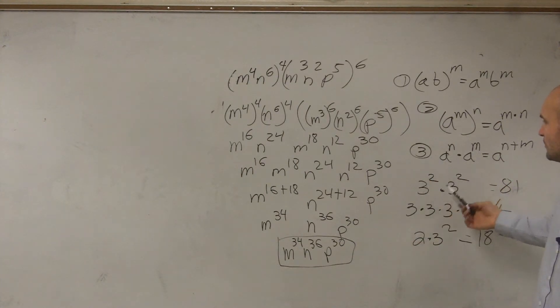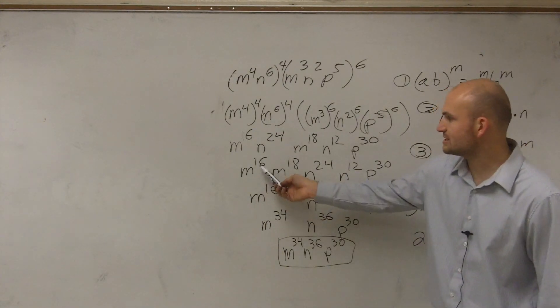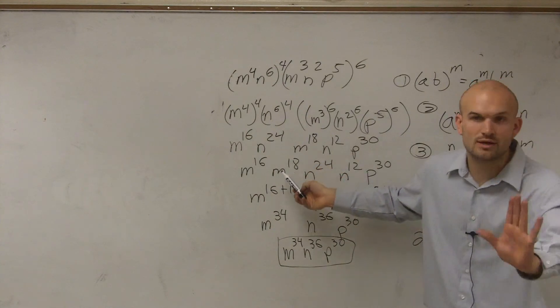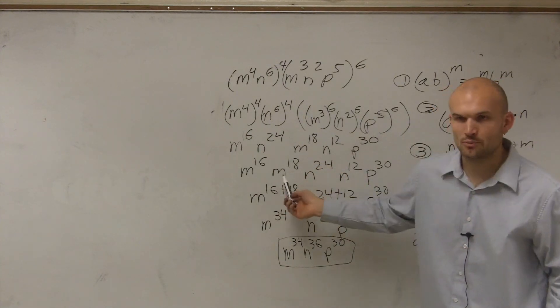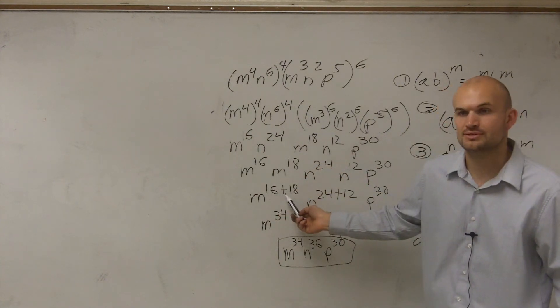So all I'm saying is when you do 3 squared times 3 squared, what that means is that's equal to 3 squared times 3 squared is equal to 3 to the 2 plus 2, which equals 3 to the 4th power. So m to the 16th times m to the 18th, all I want you to do is keep your base m and just add the exponents. OK?